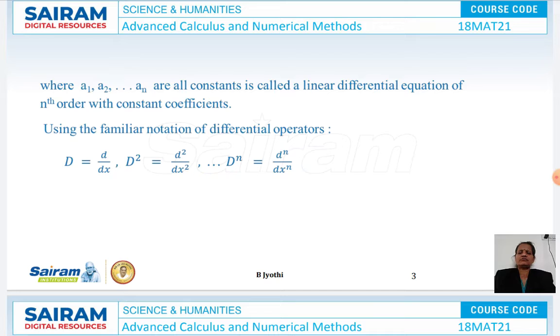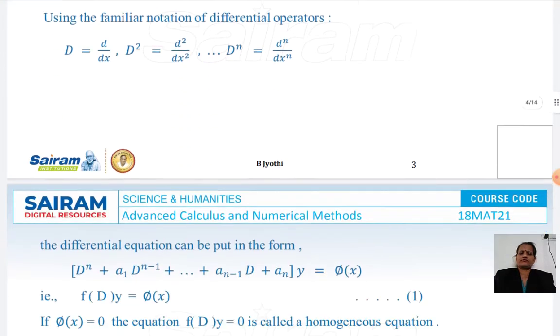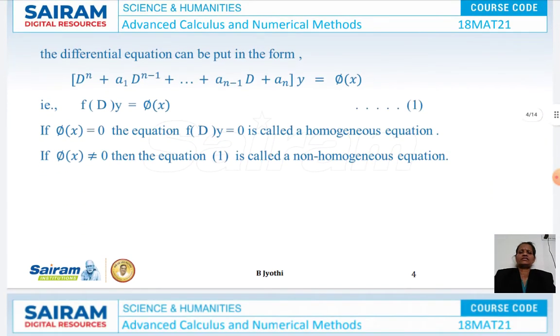Using the familiar notation of differential operators, D is d/dx, D² is d²/dx², and so on. The differential equation can be put in the form D^n plus a₁ D^(n-1) plus etc. of y equals φ(x). That is, f(D)y = φ(x). Let us call this equation number 1.